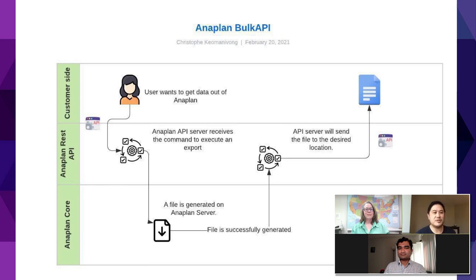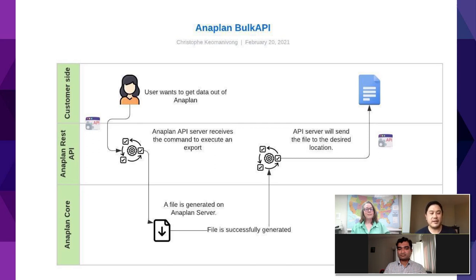That's why we created the transactional API. Instead of all those steps, once you send your instruction, you receive the outcome straight away. The response content is already in your response body. That's the main difference between the bulk API and the transactional API — you get the content immediately after you ask for it. That is the main change compared to what has been done before.